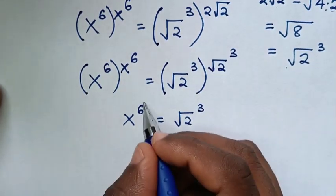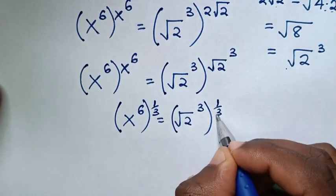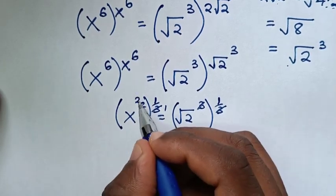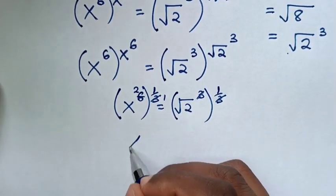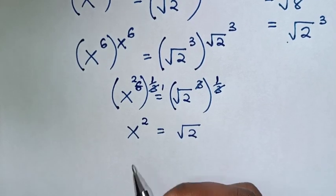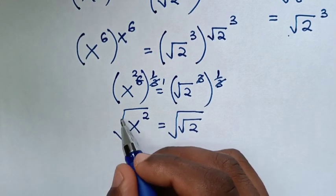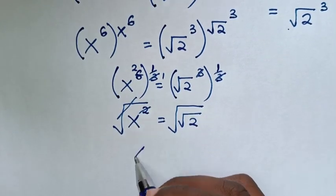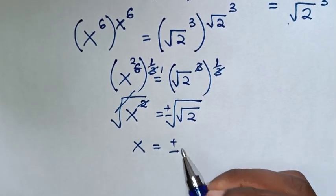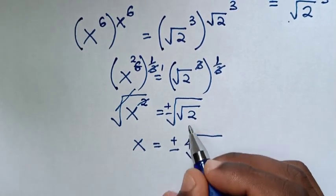Then to remove this power of 3, we multiply by power of 1 over 3 on both sides. To simplify, the 3s cancel and the 6 simplifies by 2, so it will be x power of 2 is equal to square root of 2. Then to find the value of x we apply square root on both sides, so this square root will cancel the square. Then x is equal to plus or minus square root times square root, which is fourth root, so fourth root of 2.